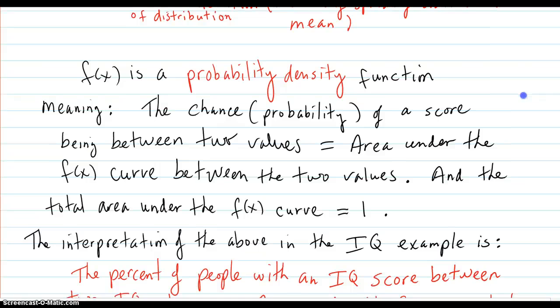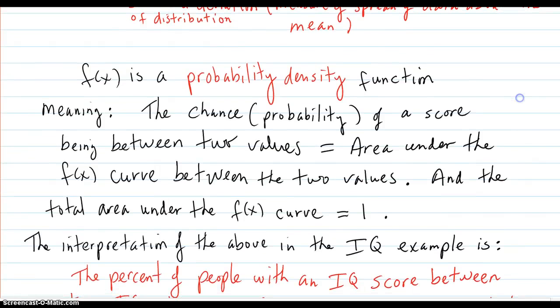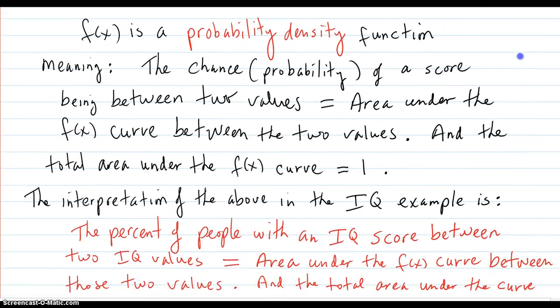Okay, so f(x) that was shown there is a probability density function. And that means that the chance or probability of a score being between two values equals the area under the f(x) curve between the two values.